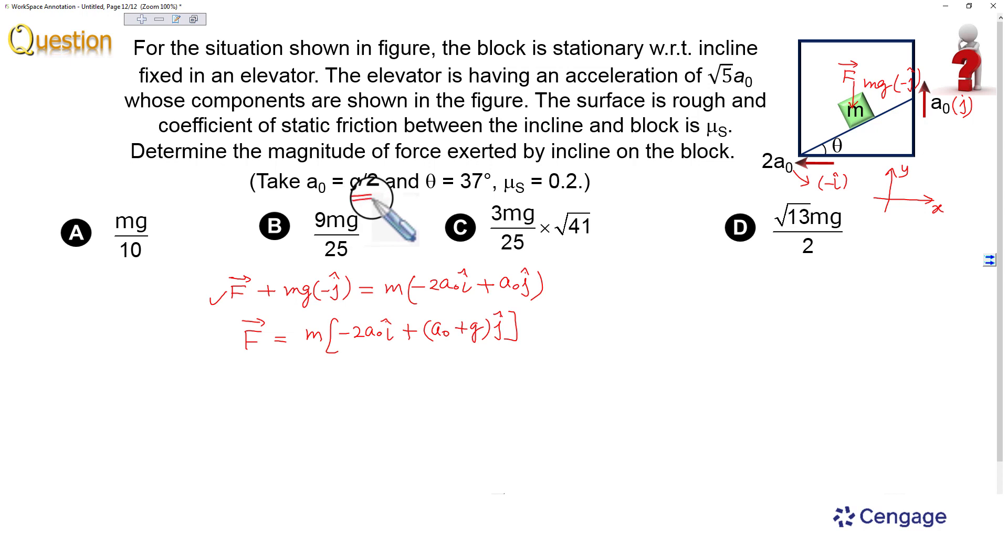Now we know a₀ = g/2. So we can write this as m × (-2 × g/2)i + (g/2 + g)j. After simplifying, this becomes m(-gi + 3g/2 j).